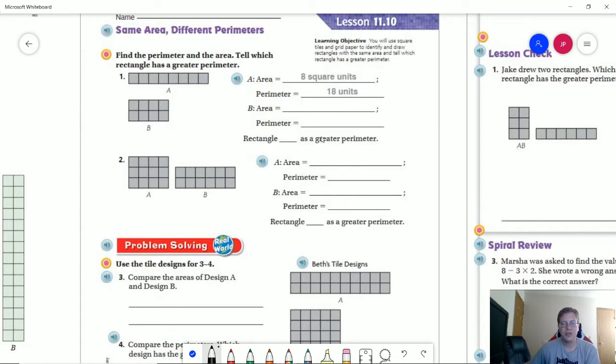So let's finish up number one and then we'll kind of go down the page. For part B here, we are going to have 4, 8, 10, 12 for the perimeter, and our area is going to match what we had in rectangle A, so that would be 8. And then rectangle B is going to have a larger perimeter.